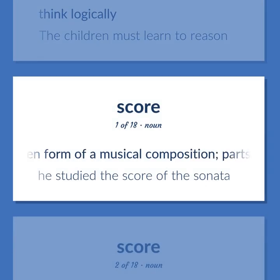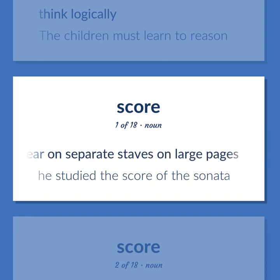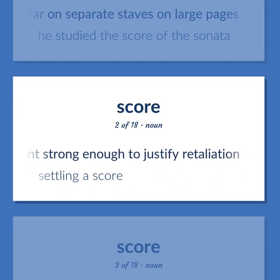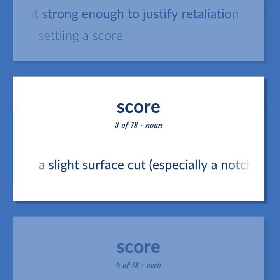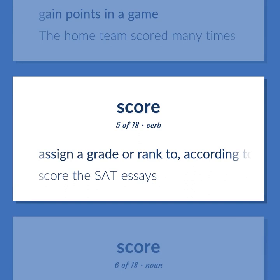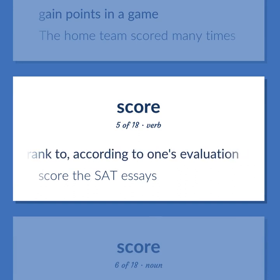Score: A written form of a musical composition; parts for different instruments appear on separate staves on large pages — he studied the score of the sonata. A resentment strong enough to justify retaliation — settling a score. A slight surface cut, especially a notch that is made to keep a tally. Gain points in a game — the home team scored many times. Assign a grade or rank according to one's evaluation — score the SAT essays.